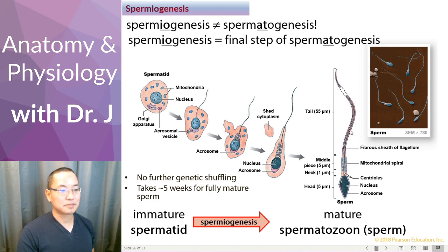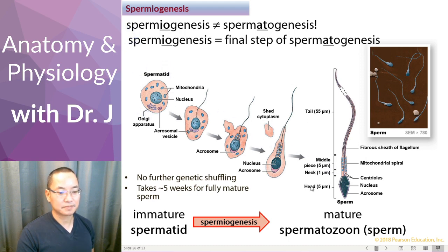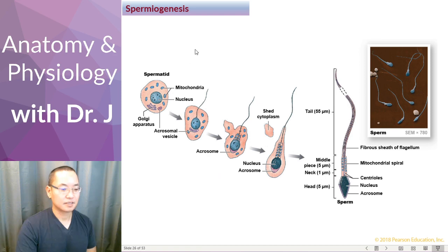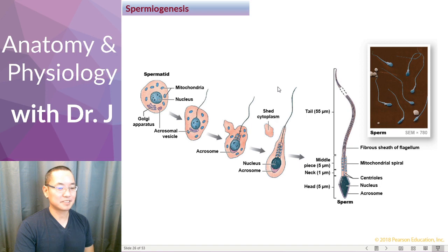Spermiogenesis includes the spermatogonium that we saw back in the previous slide, but now we're going from that spermatid to that final sperm. Now that we have a mature sperm, let's look at the sperm's anatomy itself.